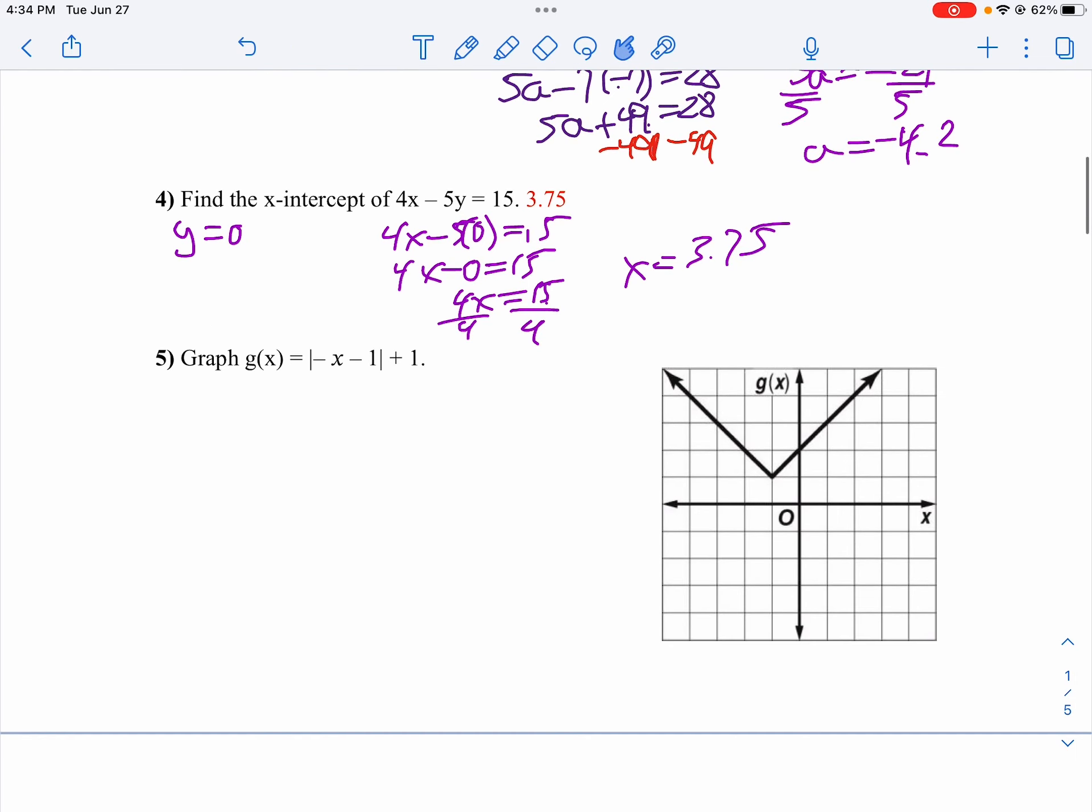On number 9, we want to do our graph. Look at what's happening here. First off, notice my plus 1. So I know my vertex is up 1. Then I see I would go to the right 1. But then, that negative means we're going to flip over the x-axis.